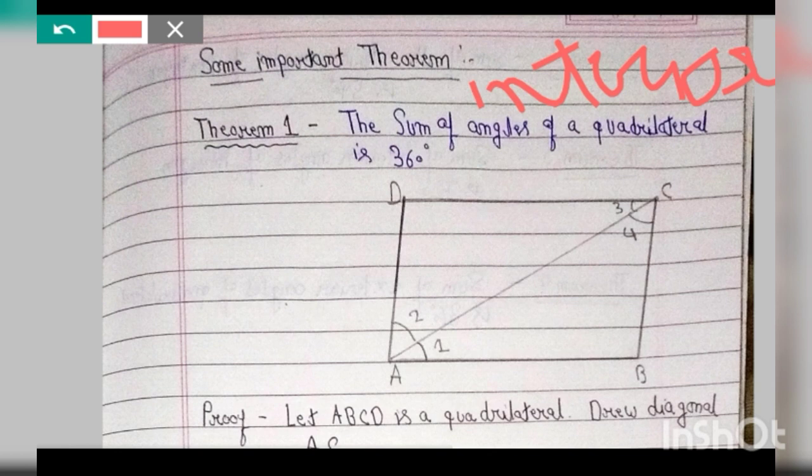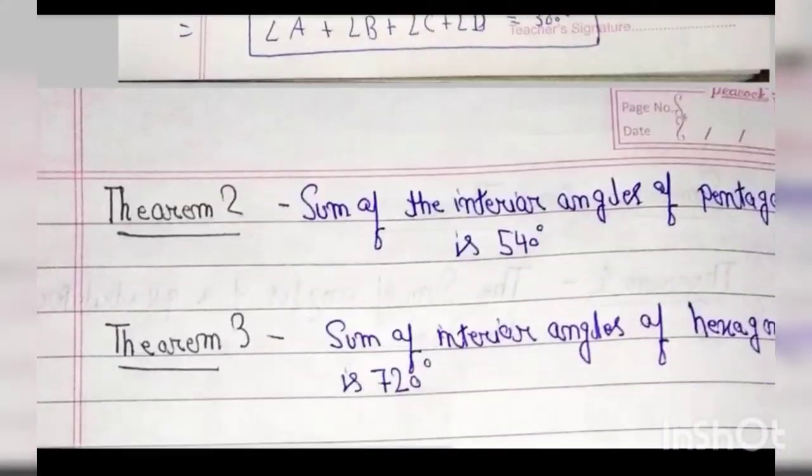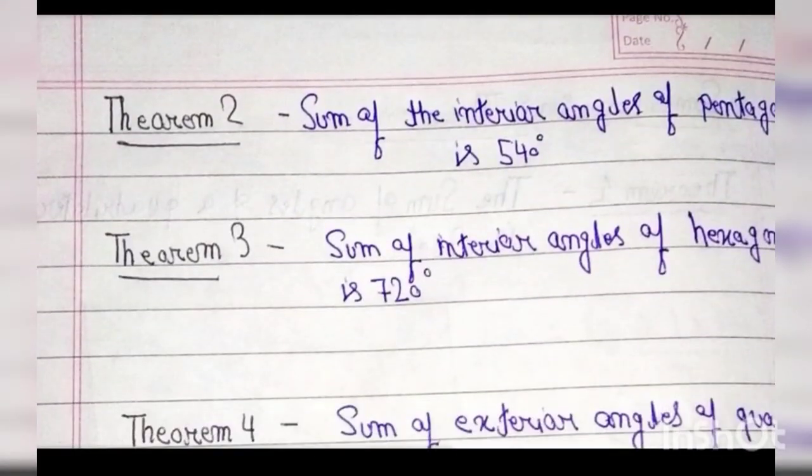The sum of the 4 angles of a quadrilateral is 360 degrees. Let us understand this proof of the theorem.